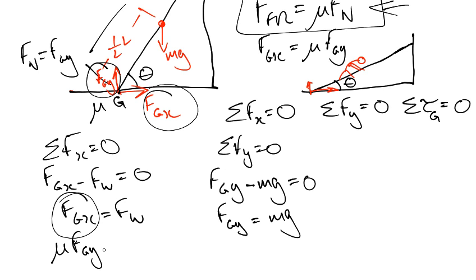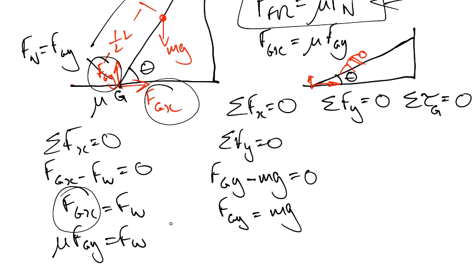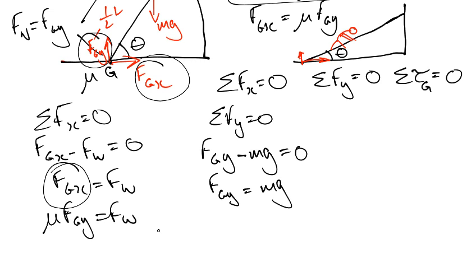So now I can just go like this. Now, I'm pretty much done because now I know. I'm trying to get theta here, by the way. Well, I'm not quite done, actually. I should rephrase that. FGY is equal to MG, right? And so now I know that μ times FGY, which is MG, is equal to FW. So I know now what FW is.